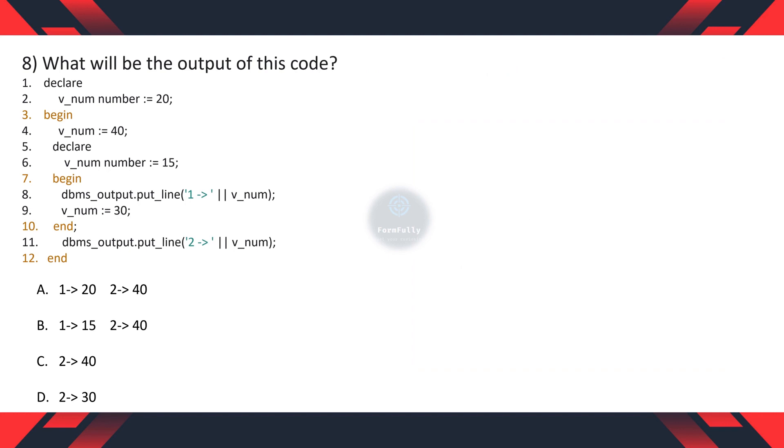Question 8: What will be the output of this code? Pause the video and read the code first. Correct option is B: one greater than fifteen, two greater than forty.